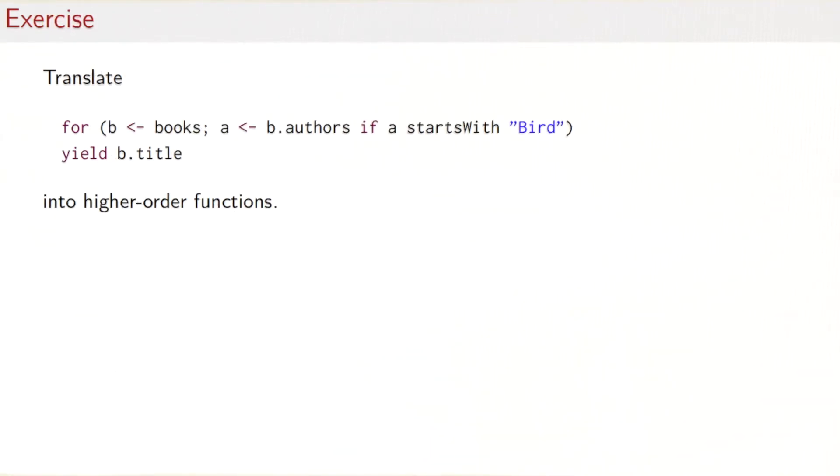So here's an exercise for you. Remember the queries we had on the books database. One of them was give me the title of all books that have an author with a certain name. Your task is to take this query and translate it into a query that does not use a for expression but only uses higher order functions.